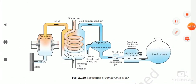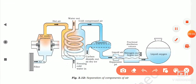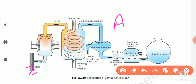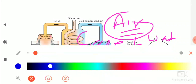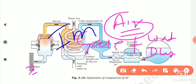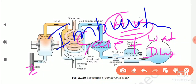Now I will explain the full topic with the help of the diagram. First, there is a filter. Air passes through the filter to remove impurities like dust, water vapour, and other particles present in the air.